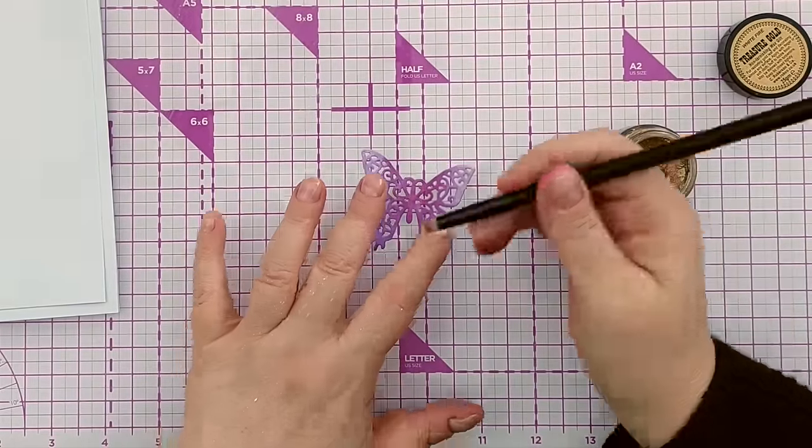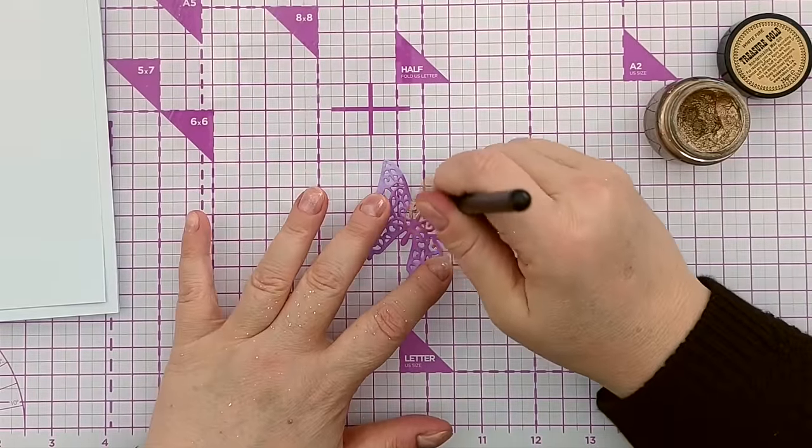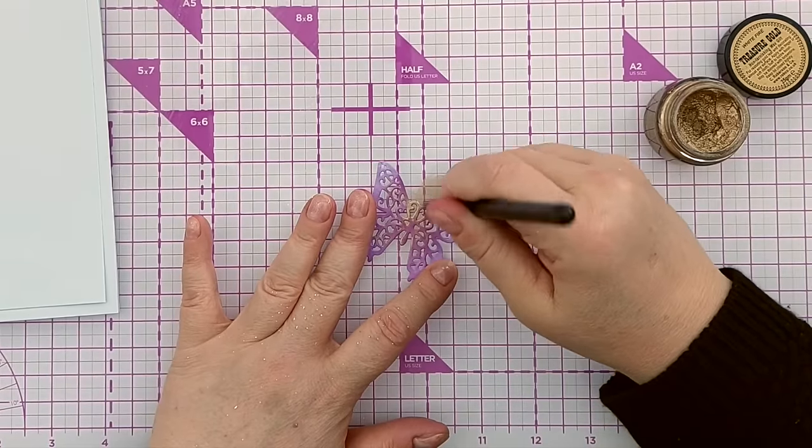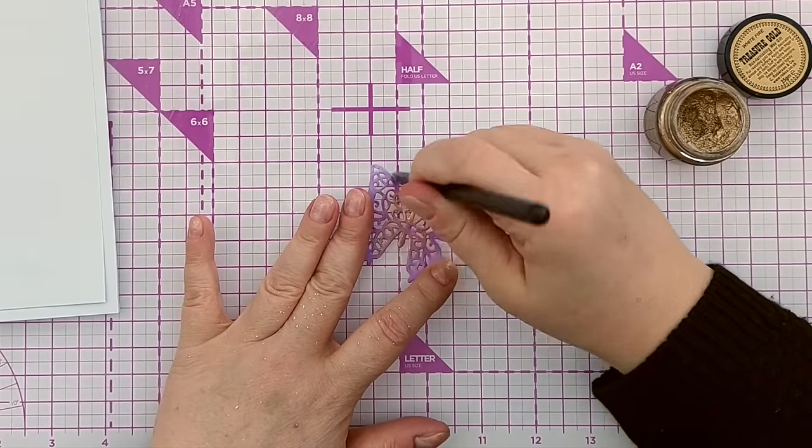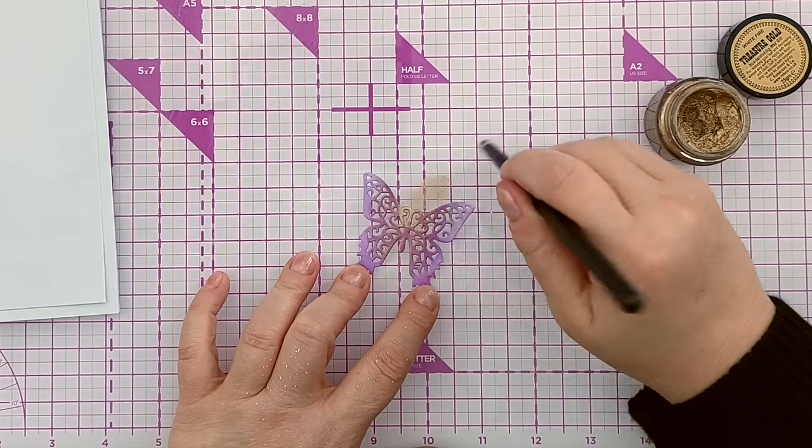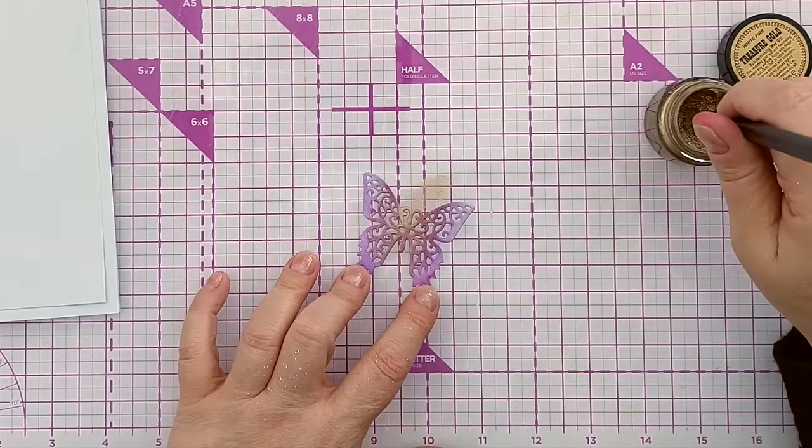Give my butterfly a bit of shimmer. I'm just going to go over him with this gilding wax. Again I think just starting in the middle. I'm working my way out. So it's heavier here on his body.